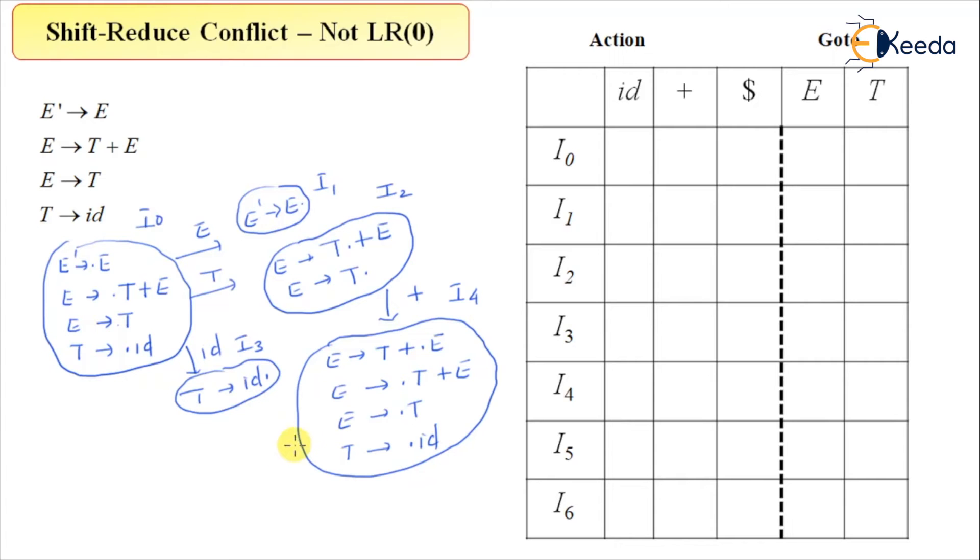So now here on input T again it will be T dot plus E and E derives T dot, so on input T it will go back here. On input id it will go back to this state I3. And the last one is on input E, and that will become E derives T plus E dot, and that I call it as I5. So we are done with this and the total number of states is I0 to I5.